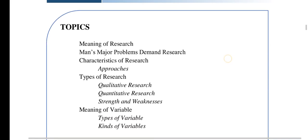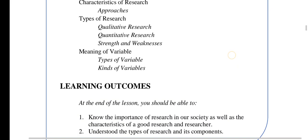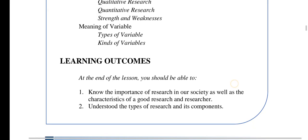The subtopics of this chapter: first is the meaning of research, characteristics of research as well as the approaches, the types of research — basically the two general types, which is the qualitative and quantitative — the strengths and weaknesses of those types of research, and the different kinds of variables.